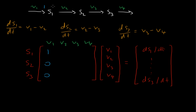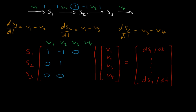For V2, the stoichiometric coefficient of S1 with respect to V2 is minus 1, the stoichiometric coefficient of S2 with respect to V2 is plus 1, and S3 is not involved in V2 so that's 0. For V3, S1 is not involved, so that's 0. S2 has a stoichiometric coefficient of minus 1, and S3 has a stoichiometric coefficient of plus 1.